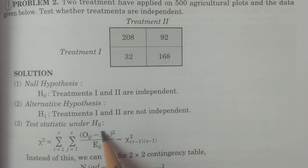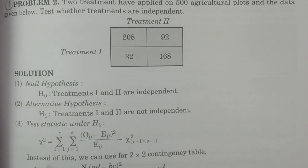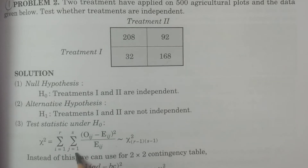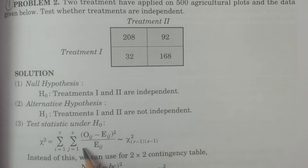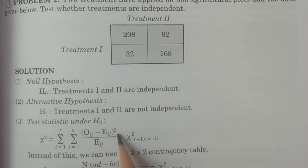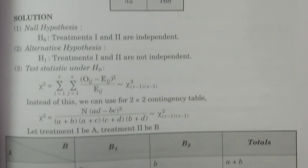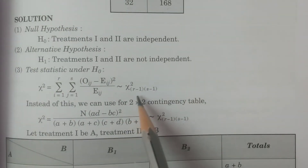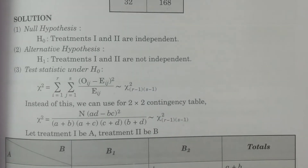Test statistic: the formula is chi-square equals summation i=1 to r, summation j=1 to s, of (Oij minus Eij) whole square divided by Eij, which follows chi-square with (r-1) into (s-1) degrees of freedom.